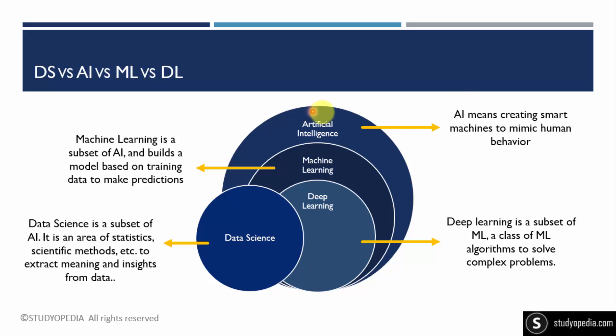Now we'll quickly see the differences. Artificial intelligence is the widest term — AI includes machine learning, deep learning, and data science. AI means how we can create intelligent computer machines that imitate and mimic human behavior to ease human tasks and do work better and more quickly than humans.